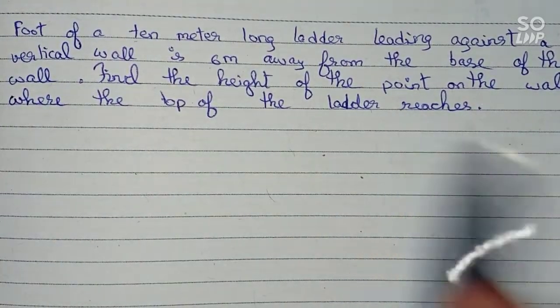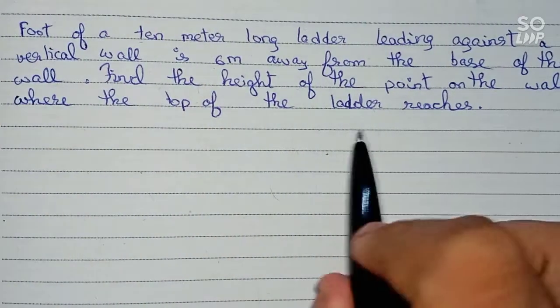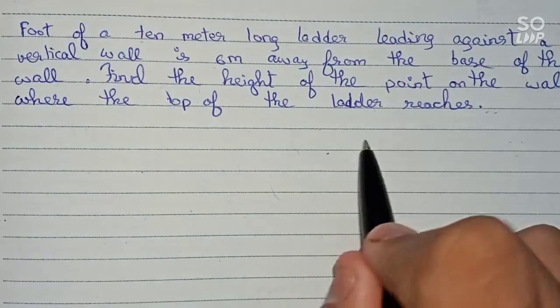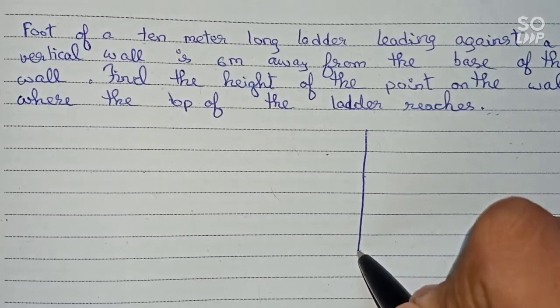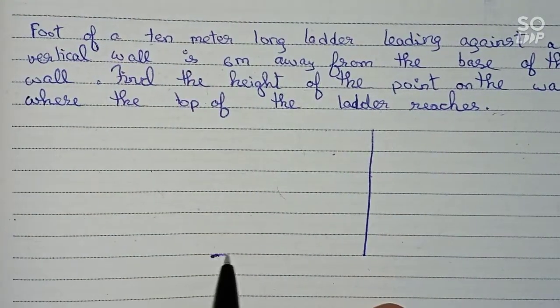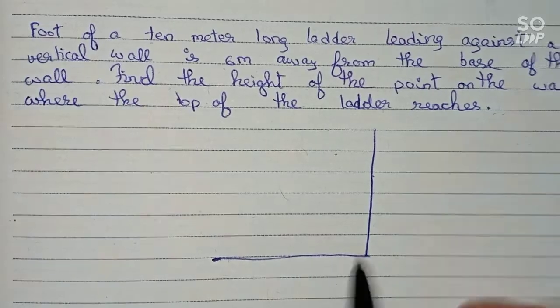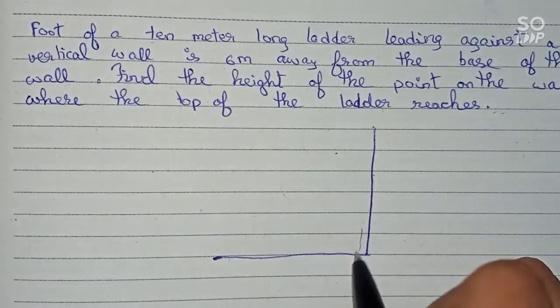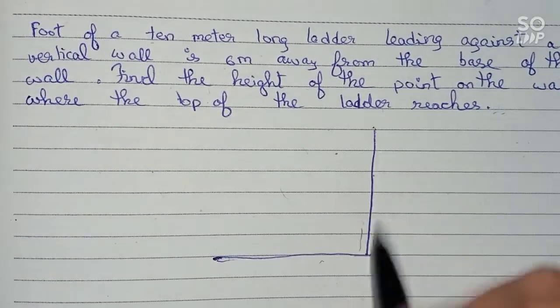First we draw a diagram to explain what case this is. So like this is a wall, and this is the ground level. Obviously this angle formed by the ground and the wall will be 90 degrees.